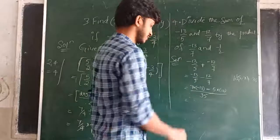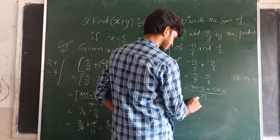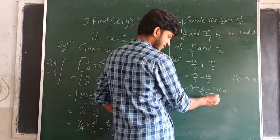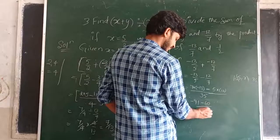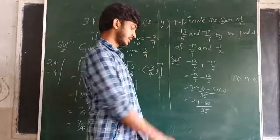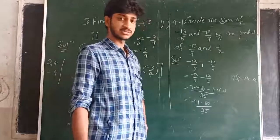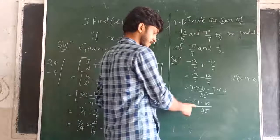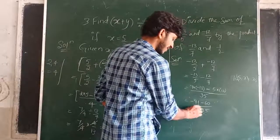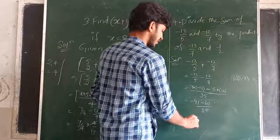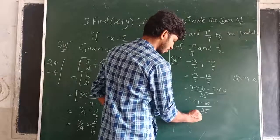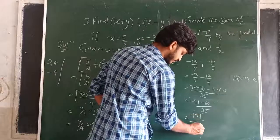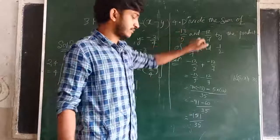7 into 13: 7 threes are 21, 7 plus 2 is 9, so 91. So we have minus 91 minus 60 in the numerator over 35. Both terms in the numerator are negative, giving minus 151 by 35 as the sum of these two numbers.